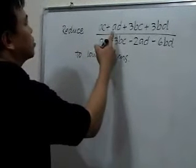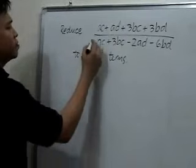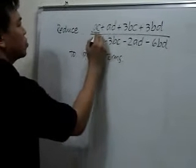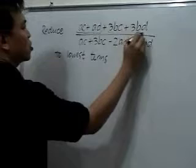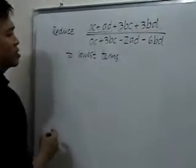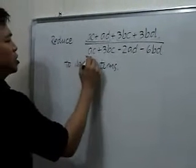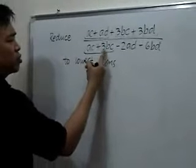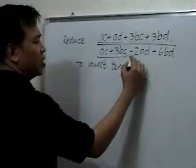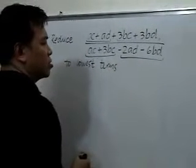We'll resort to factoring by grouping. I'll group these first two terms here, and then the last two terms will comprise the second group. And we'll do the same for the first two terms in the denominator and then the last two terms.